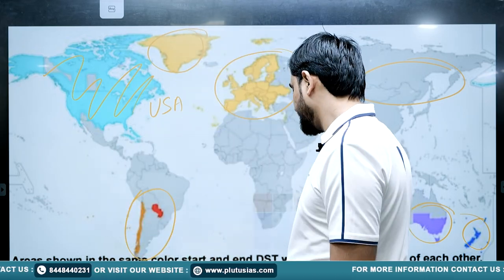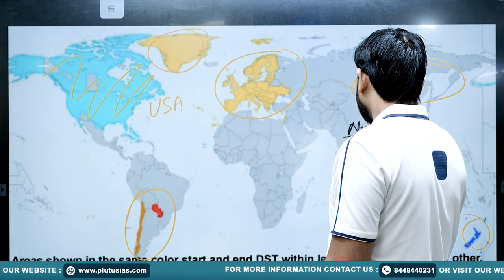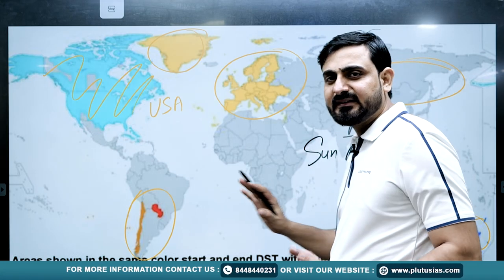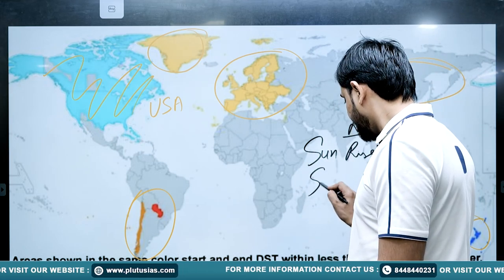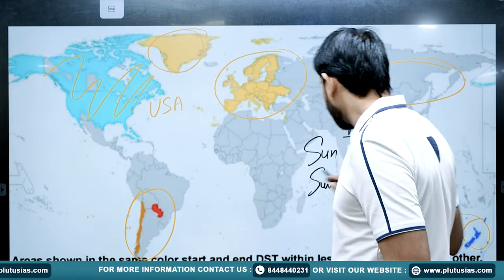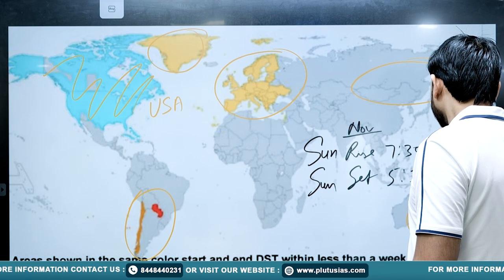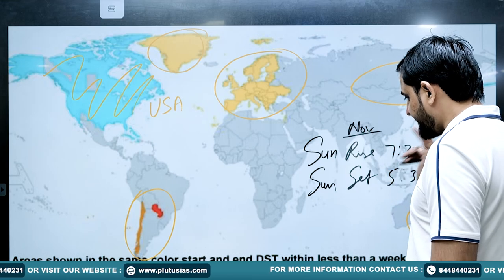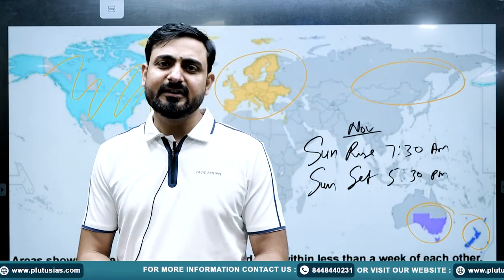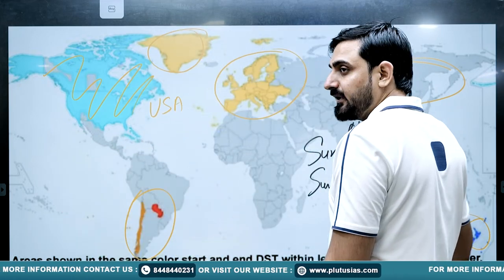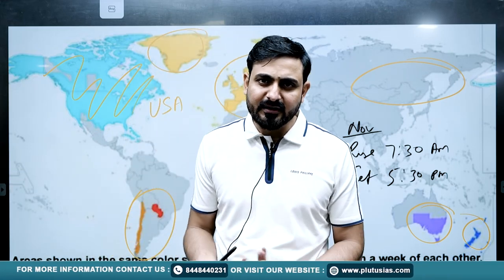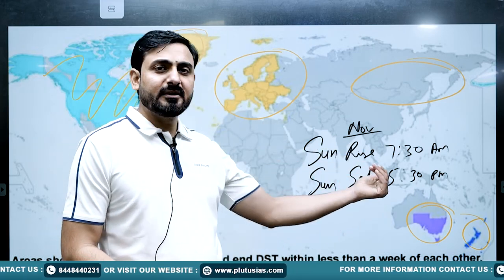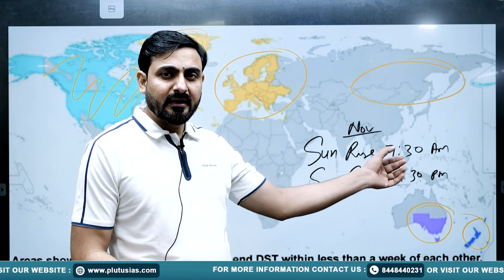In the month of November, talking about India: the time of sunrise is probably around 7:30am, and sunset is around 5:30pm. Now, for equatorial countries like Indonesia, Malaysia, Maldives, and even Andaman and Nicobar in India, sunrise is around 6:30am and sunset around 6:30pm. So in equatorial countries, the length of day and night is around 12 hours each, while in India in November, the length of day is around 10 to 11 hours.